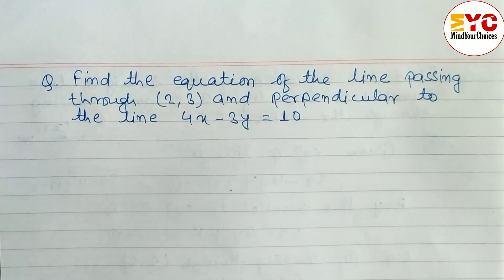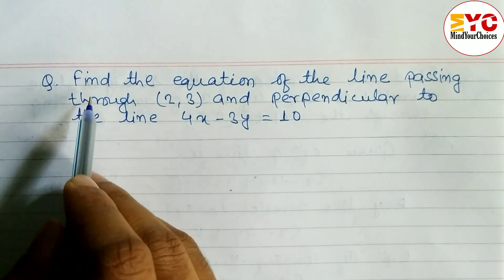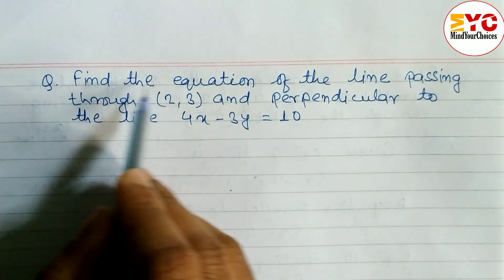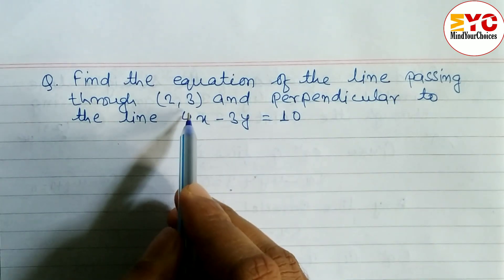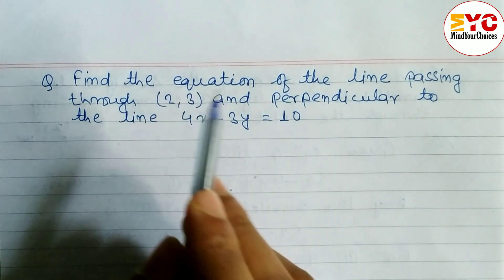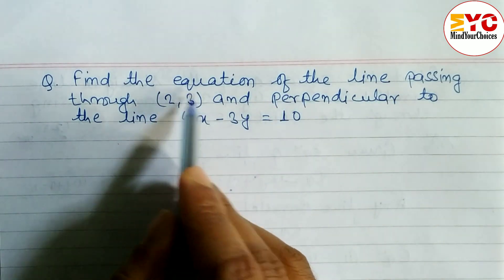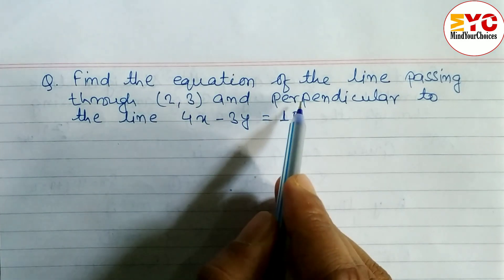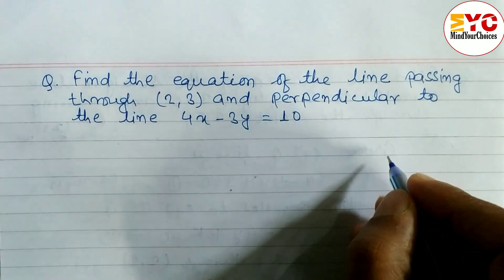This question is taken from coordinate geometry from class 10 and 12. We have to find the equation of a straight line passing through the point (2, 3) and perpendicular to the given line.